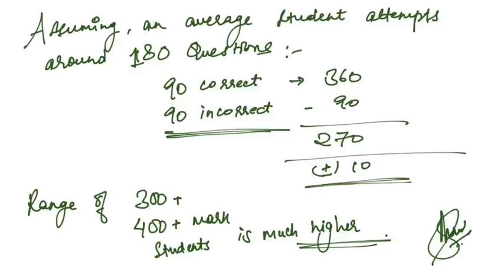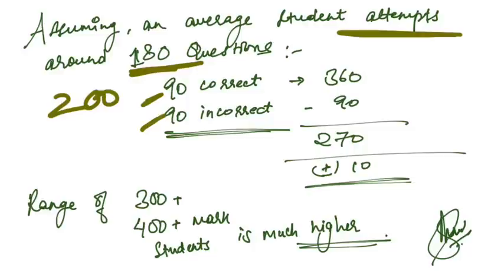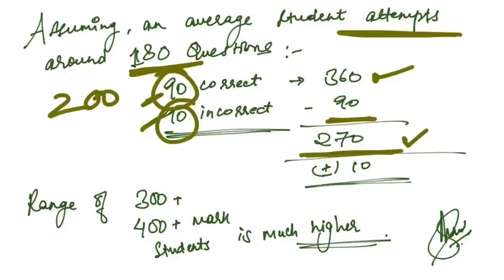Assuming an average student attempts around 180 questions out of 200, they get 90 correct and 90 incorrect questions. In this scenario, 360 is the score from correct answers and minus 90 for incorrect, so around 270 total. Plus or minus 10 or 15, the range is 260 to 280.